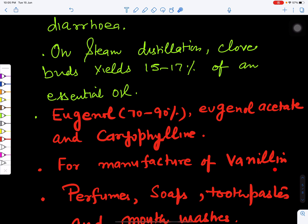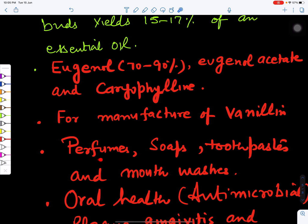This clove oil has many uses. This can be used for the manufacture of vanillin. Vanillin is also used for flavoring food, perfumes as well as in pharmaceutical industries. This is used in the preparation of perfumes, soaps, toothpaste.